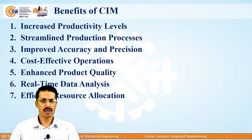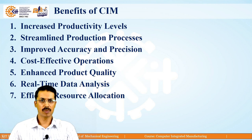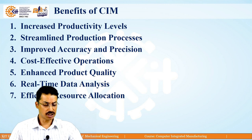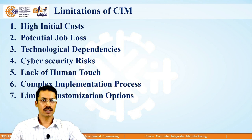Next is effective resource allocation — whatever available resources we have, we can allocate them effectively at the right places. These are some of the benefits we are getting after implementation of the CIM system.